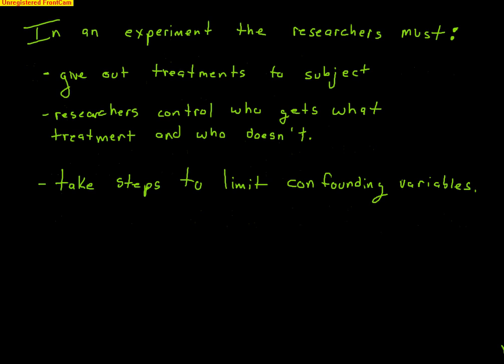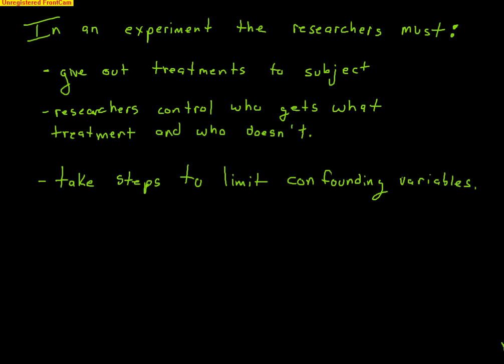The distinction between an experiment and an observational study is: in an observational study, we cannot show cause and effect relationships, but in an experiment, we can. In an experiment, the researcher must give out treatments to the subjects. The researcher determines who gets what treatment, controls who gets it and who doesn't, and also takes steps to limit confounding variables. In an observational study, because all you're doing is observing, you have the potential for confounding variables to come into play. In an experiment, you as the researcher must limit those confounding variables.